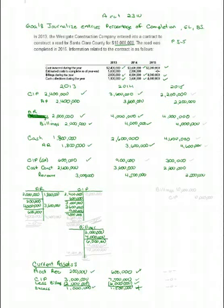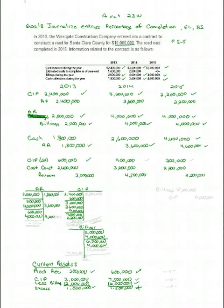Let's quickly post these. Construction in progress gets $2,200,000 of current year costs. Accounts receivable goes up for current year billings, as does the billings account itself. Cash goes up and accounts receivable goes down for customer payments of $4,600,000. The last amount tucked into construction in progress is the $300,000 profit — last year it was $900,000, this year it's $300,000.